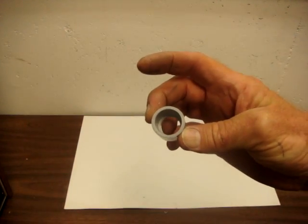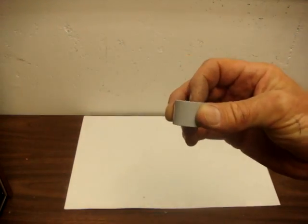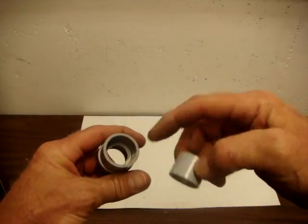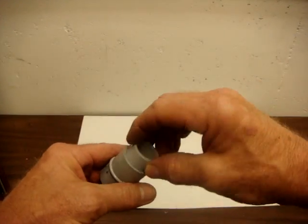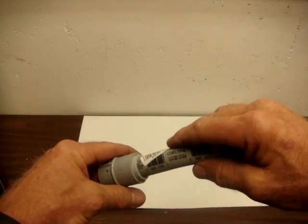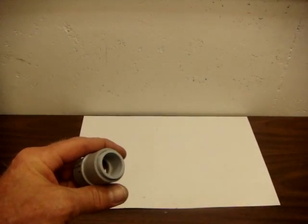They also make reducing bushings. So if you wanted to use half inch conduit in a three quarter inch fitting, you can put glue here and then glue the half inch conduit into that fitting.